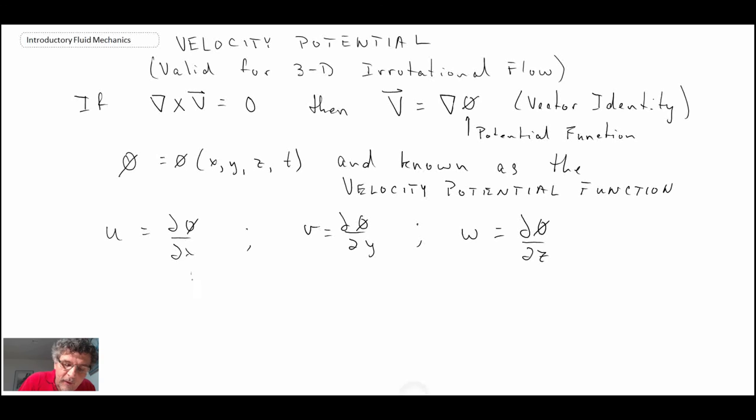And what we can say is that lines of constant phi, or potential, are potential lines. So what we're going to do in the next segment, we're going to explore this a little bit further.